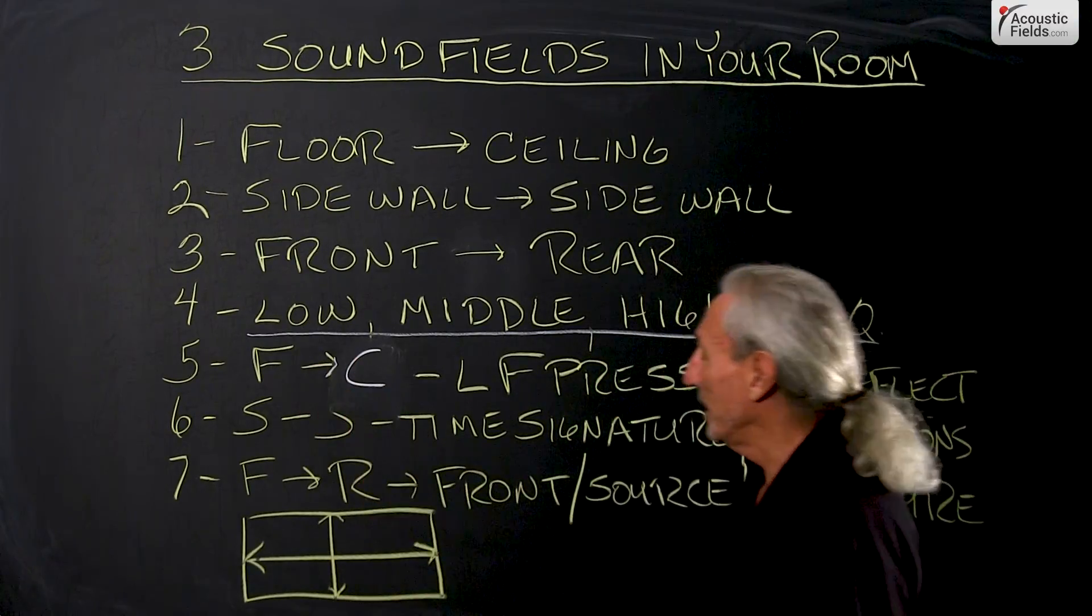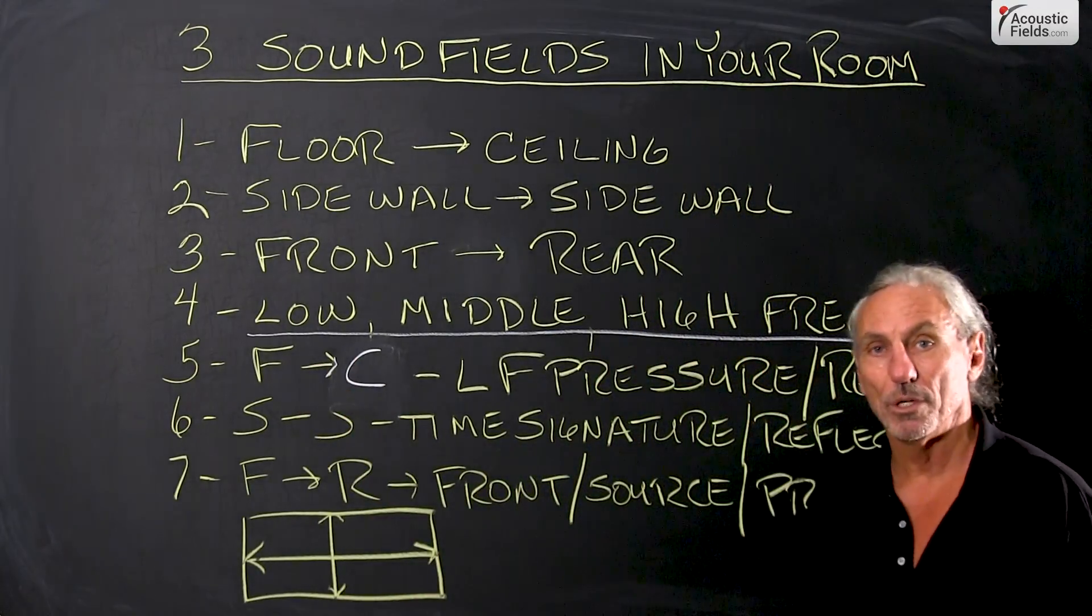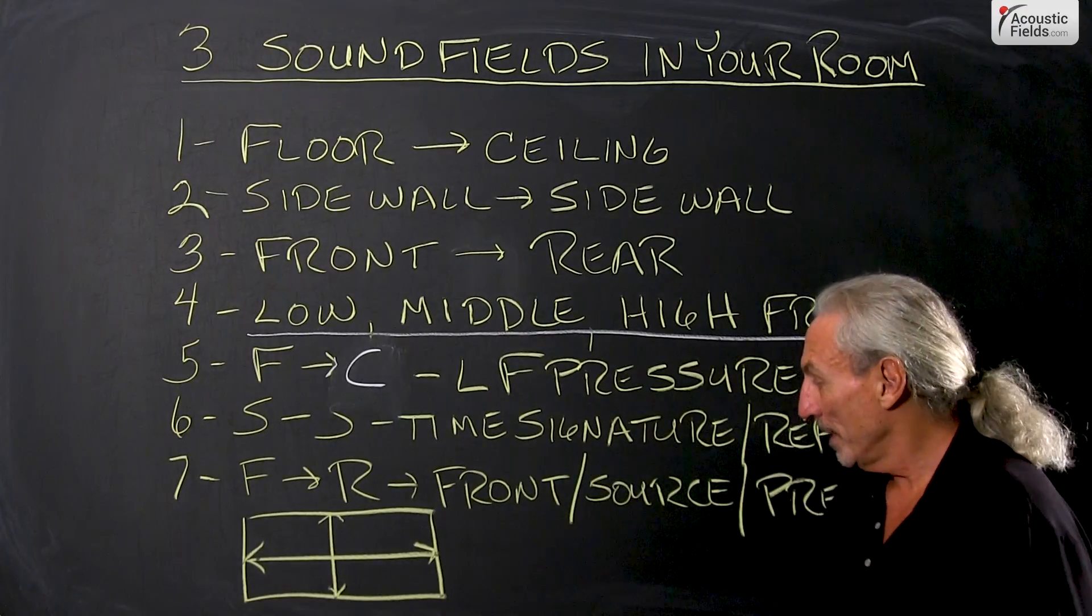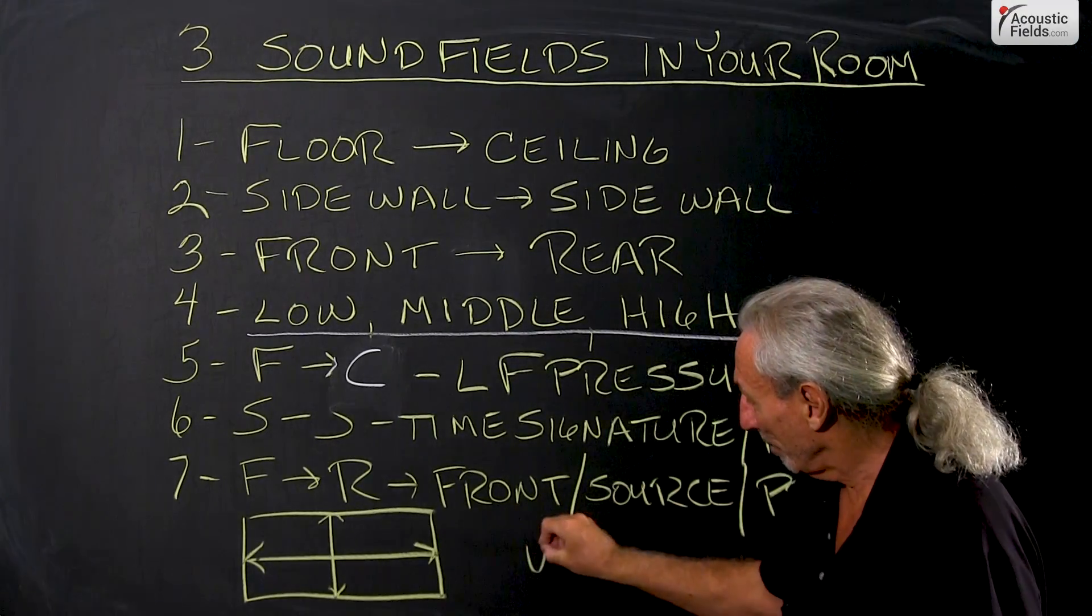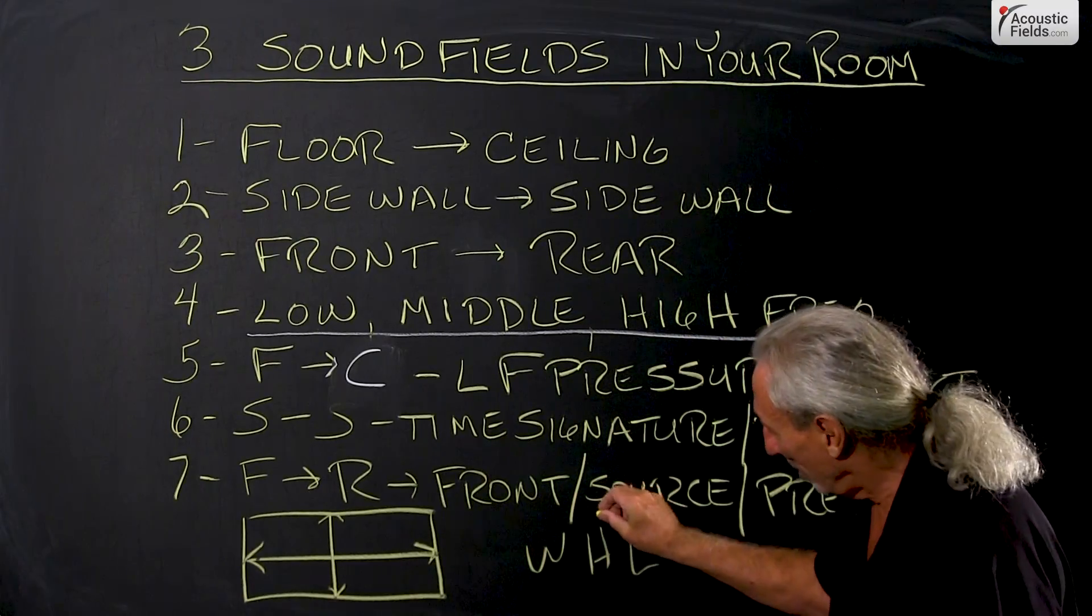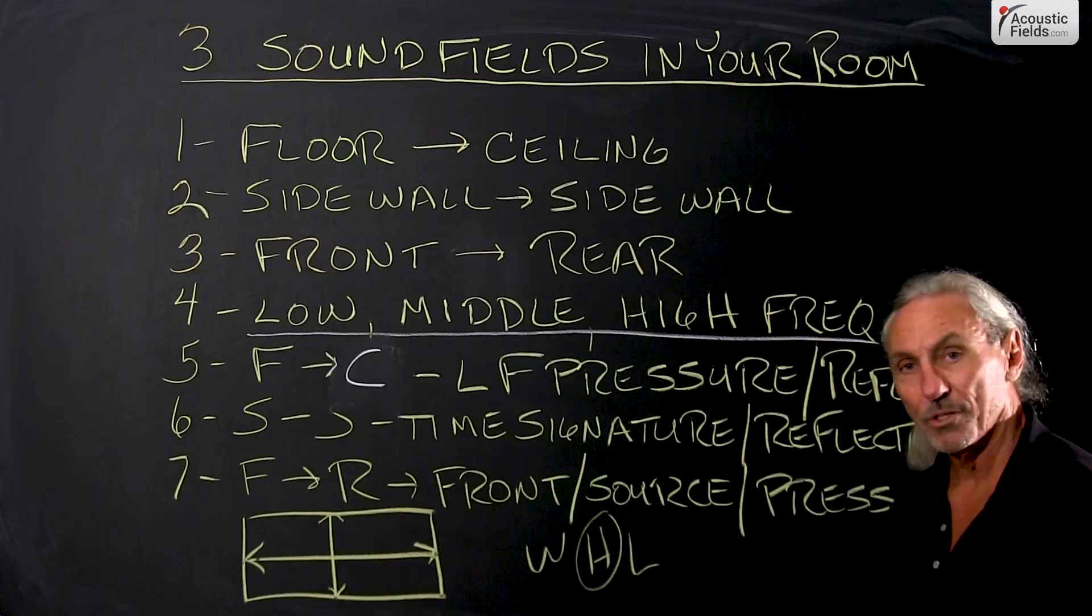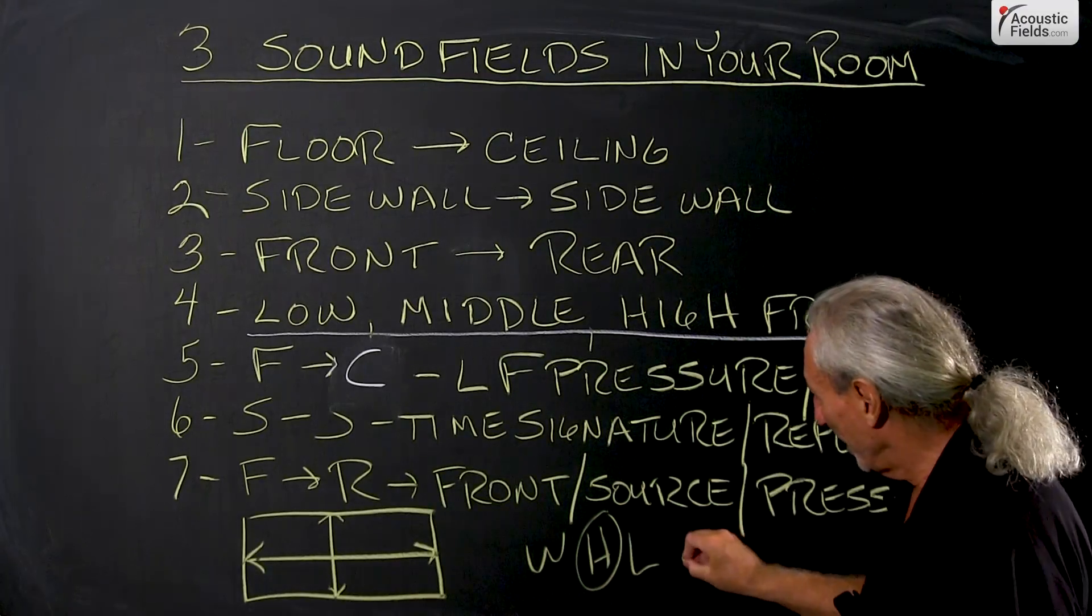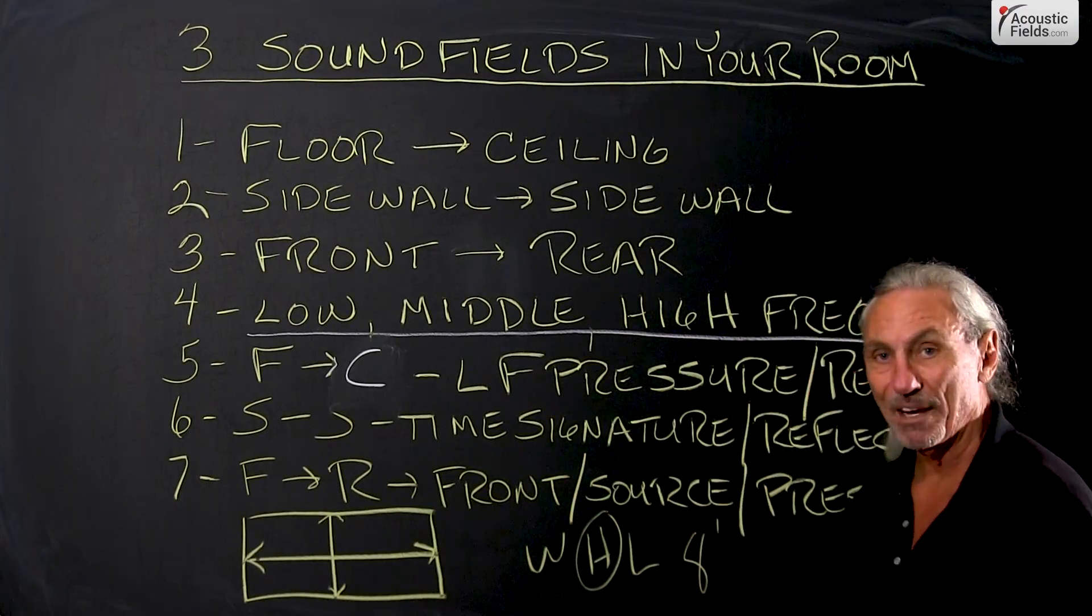The floor to the ceiling is always a source of unwanted low frequency pressure. Why? Because when we have our width, height, and length, it's always the height dimension that's the smallest. In North America we always have that nasty eight foot.